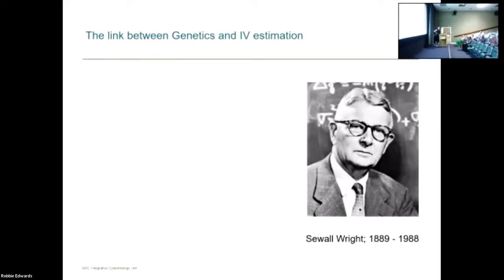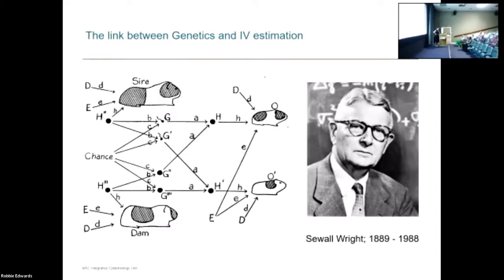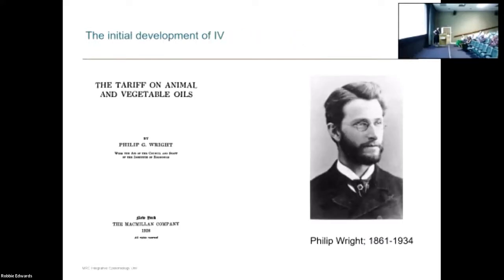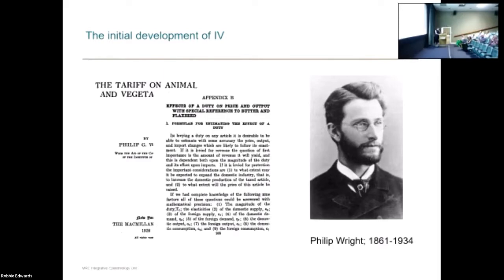There's a lot of history here at this conference. Sewall Wright was a geneticist quite involved in developing path analysis. This is his father Philip Wright, who was an economist who wrote a book — almost certainly as boring as the title makes it sound. In the appendix of that book he wrote the first exposition of instrumental variables, back in the 1920s. It really wasn't picked up for a long time after that, but it was the first exposition of instrumental variable analysis.